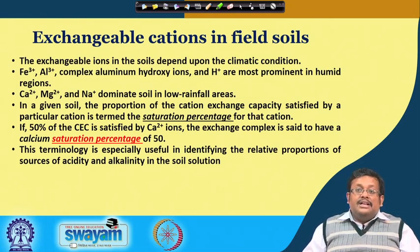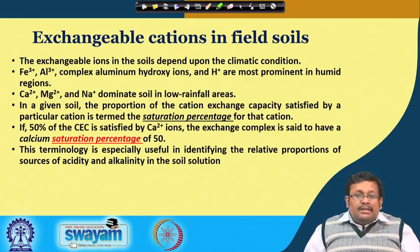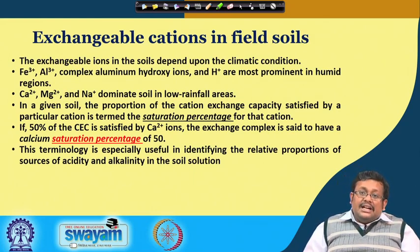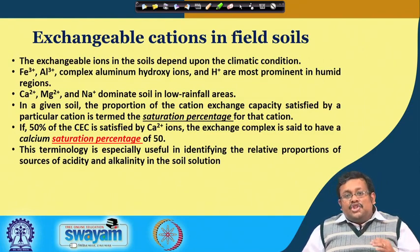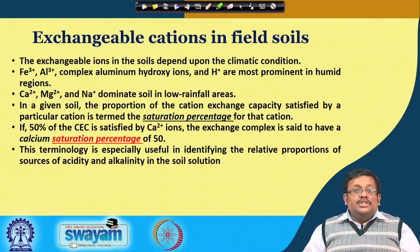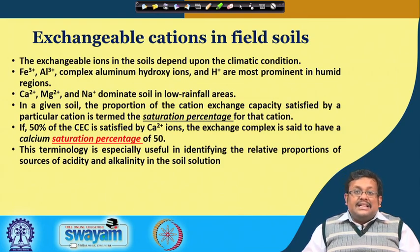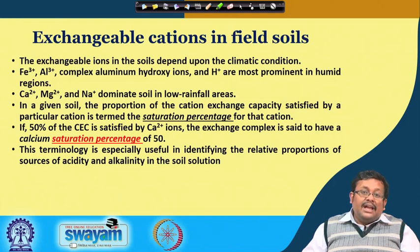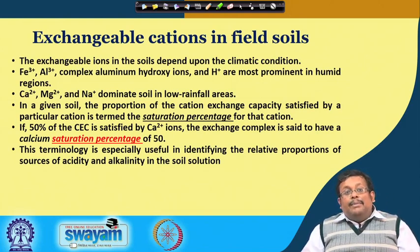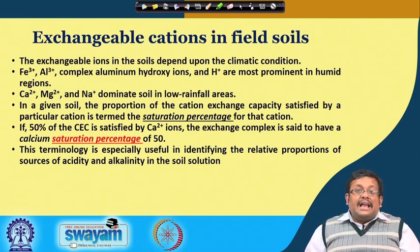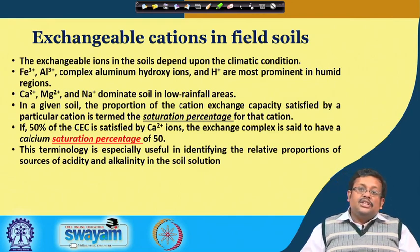In low-rainfall arid regions, there will be predominance of different types of salts because of high evaporative demand, resulting in soils dominated by calcium, magnesium, and sodium ions. In a given soil, the proportion of the cation exchange capacity satisfied by a particular cation is termed the saturation percentage of that cation. For example, if 50% of the CEC is satisfied by calcium ions, the exchange complex is said to have a calcium saturation percentage of 50.